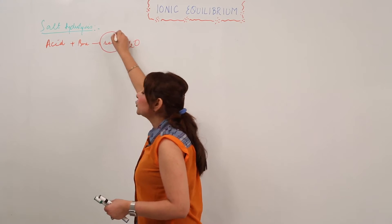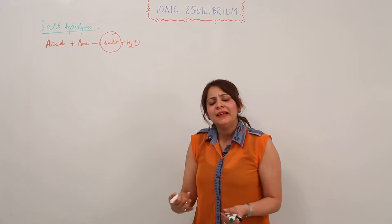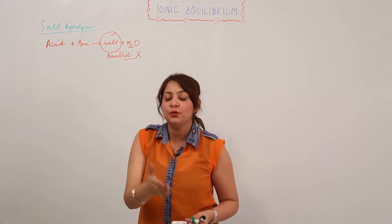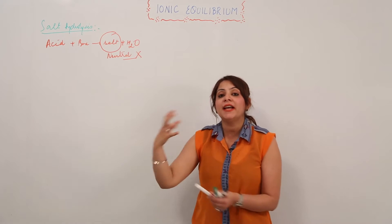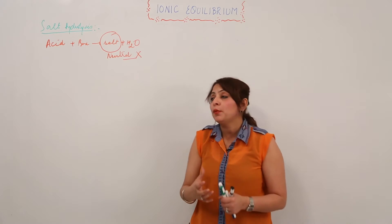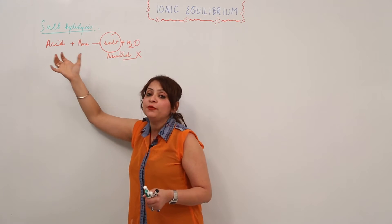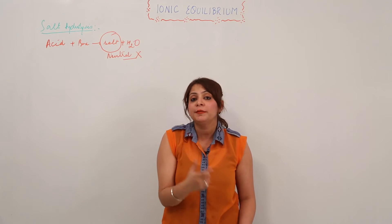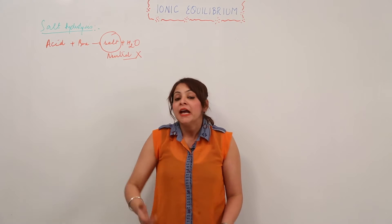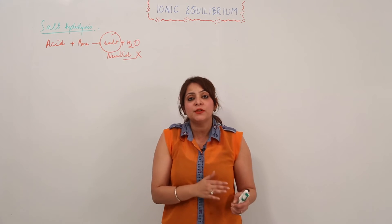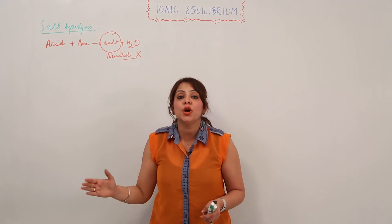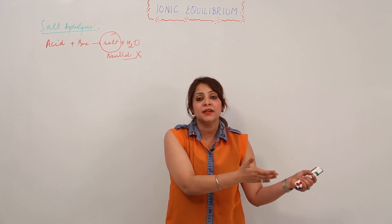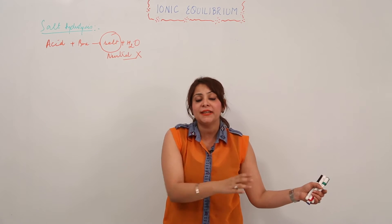As the name suggests, acid is acidic and base is basic in nature. We often think that salt is always neutral, but actually it is not. It can be neutral, slightly acidic, or slightly alkaline. This totally depends upon which acid and which base it is formed from. If we have a strong acid and a strong base, we get a neutral salt. But if one is strong and the other is weak, we will not get a neutral salt.